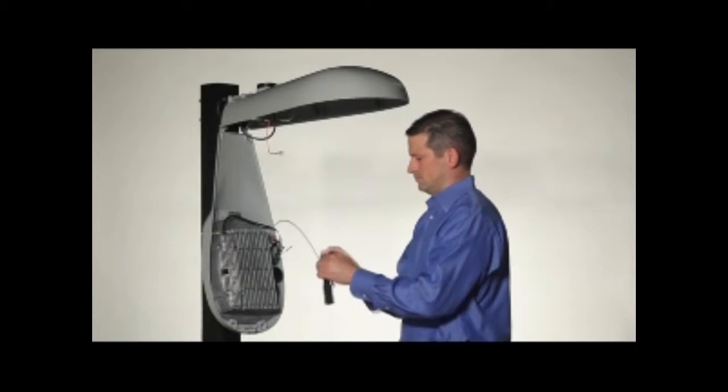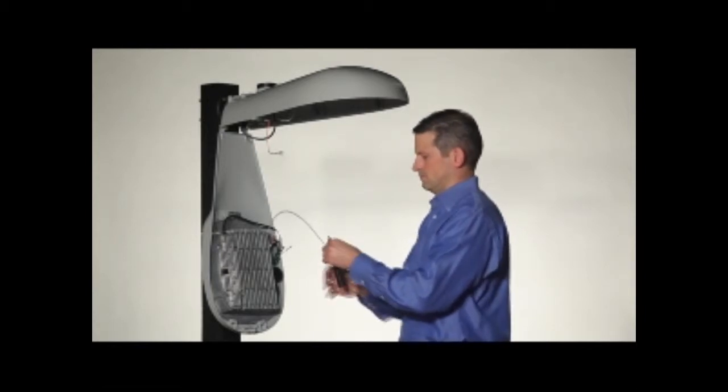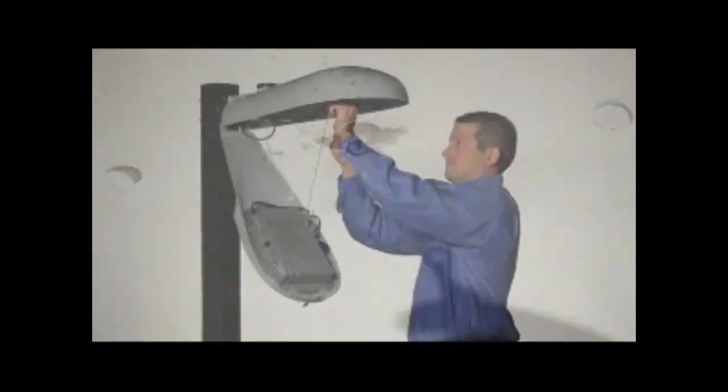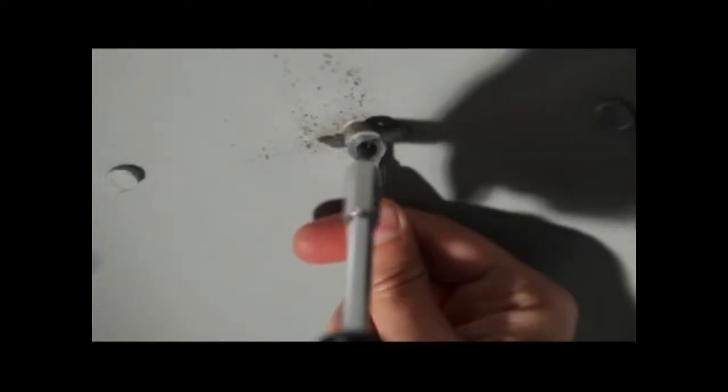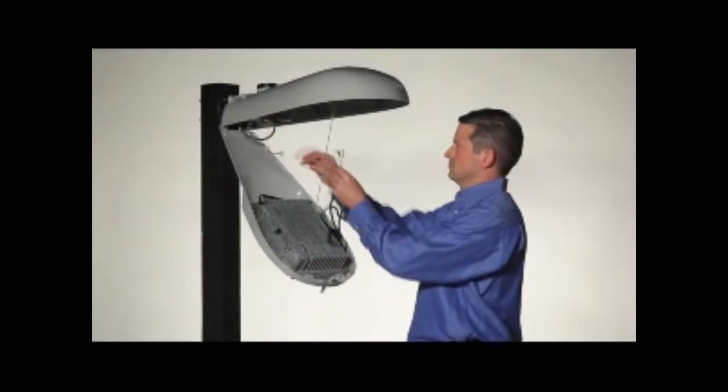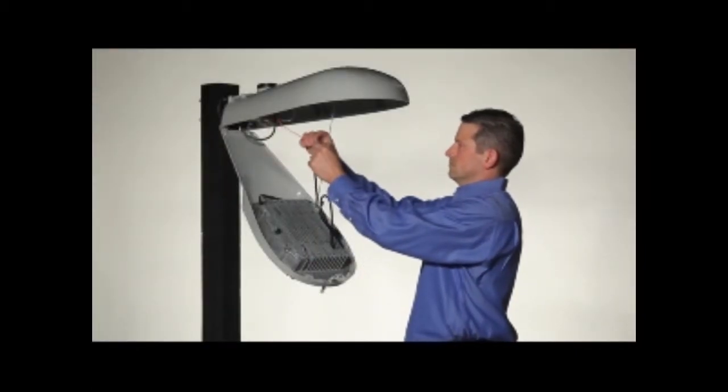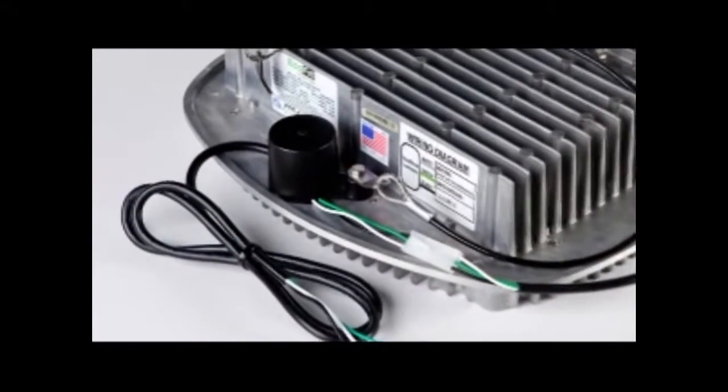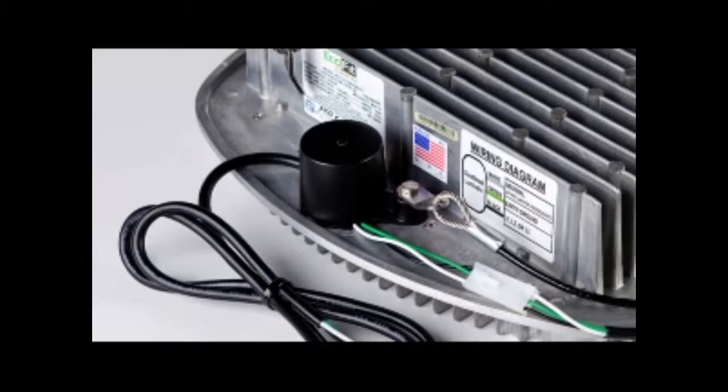Secure the safety cable on the light engine to the upper housing of the fixture. Connect the ground wire from the light engine to the upper housing of the fixture.